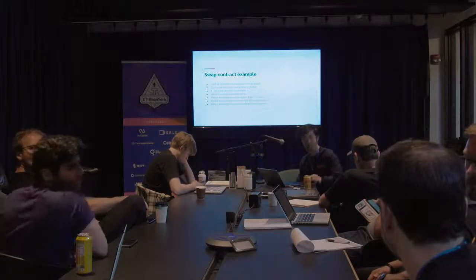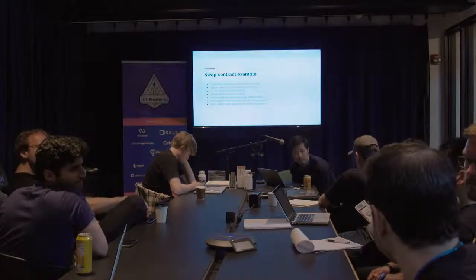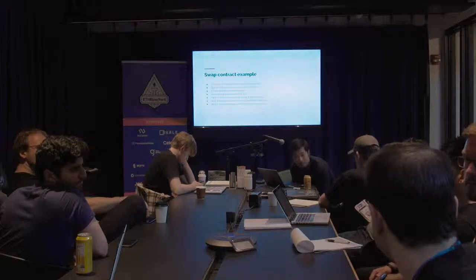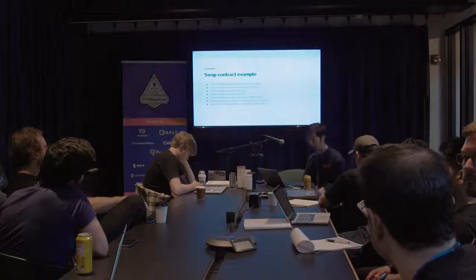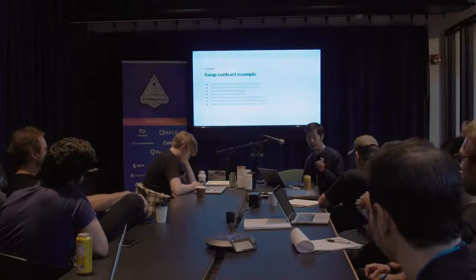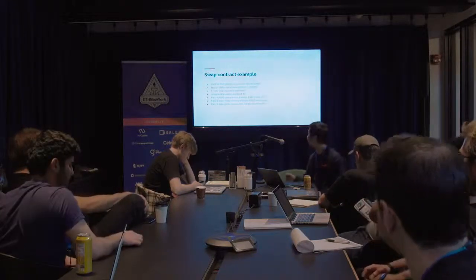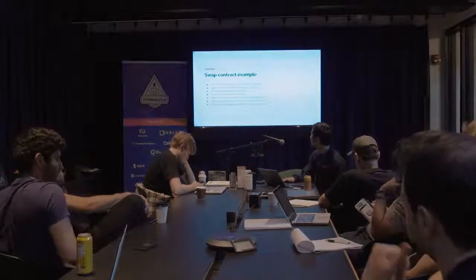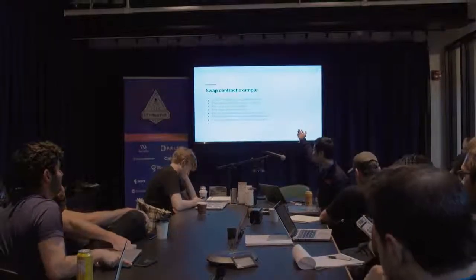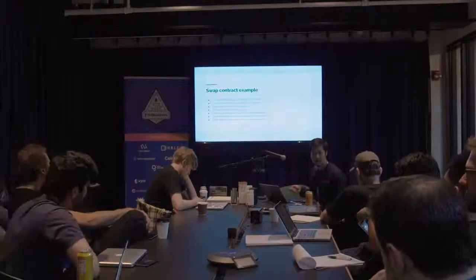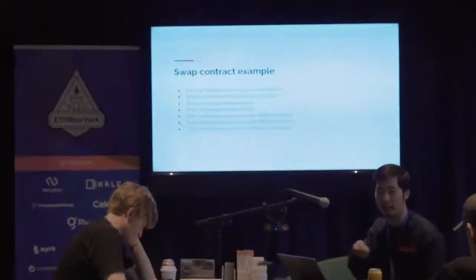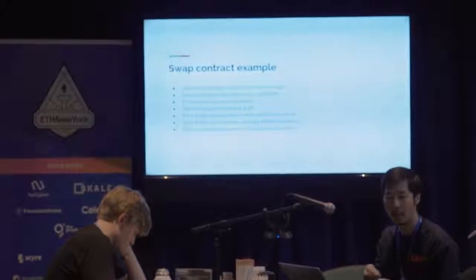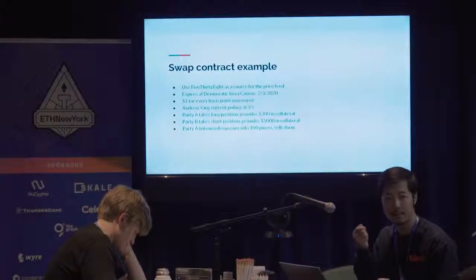In the UMA system, where it's commissionless and perhaps anonymous, how does party A and B come together to create the instrument? Finding the counterparty and token distribution are definitely two challenges. There is a way to modify the swap where instead of two initial counterparties, you have one counterparty that provides all the collateral, tokenizes the other side, and then finds people willing to buy those tokens.